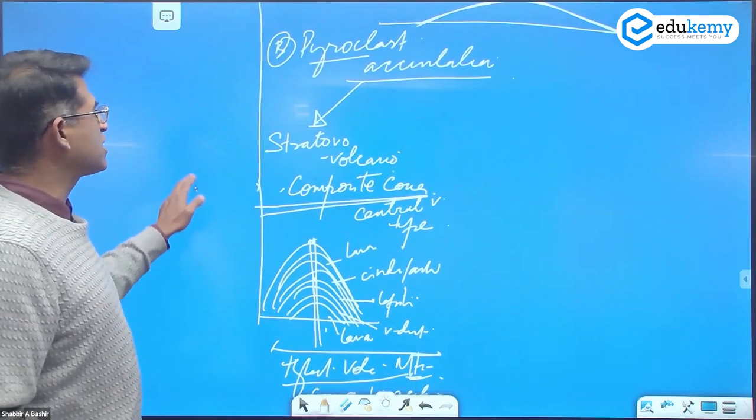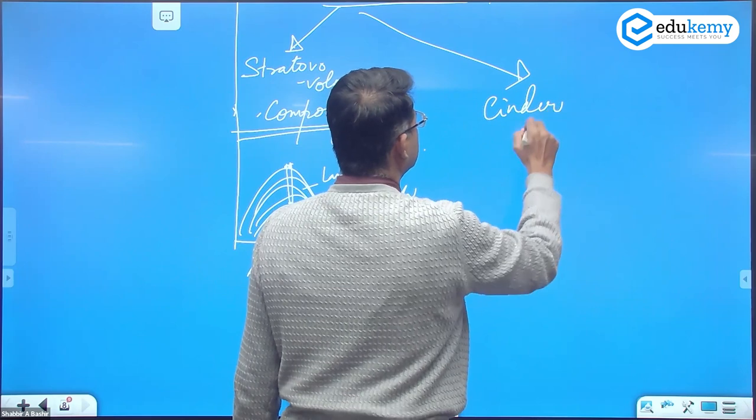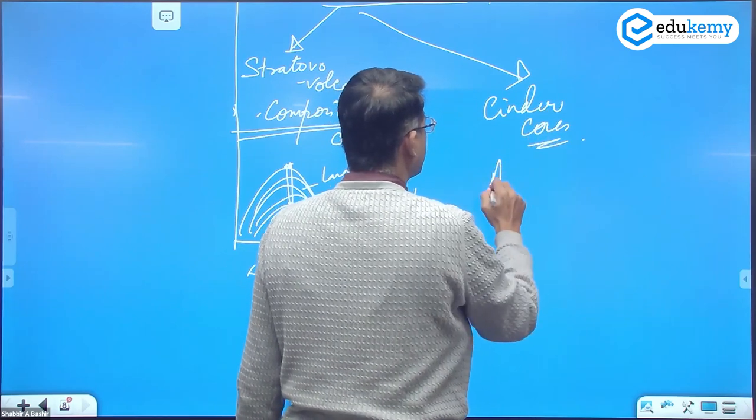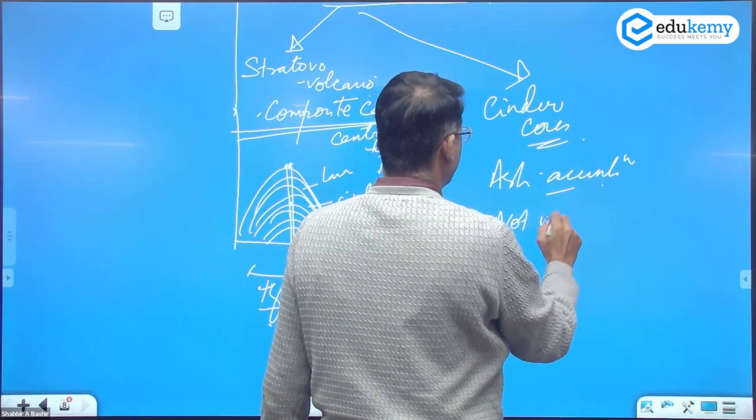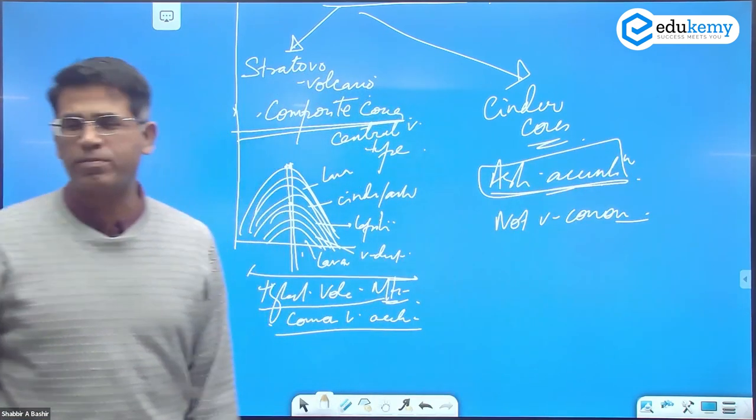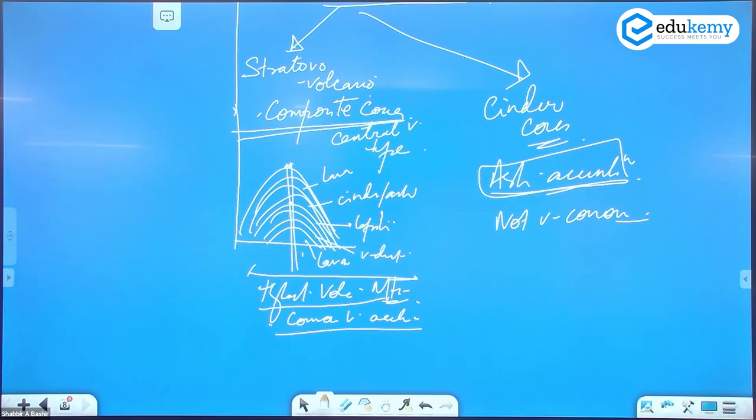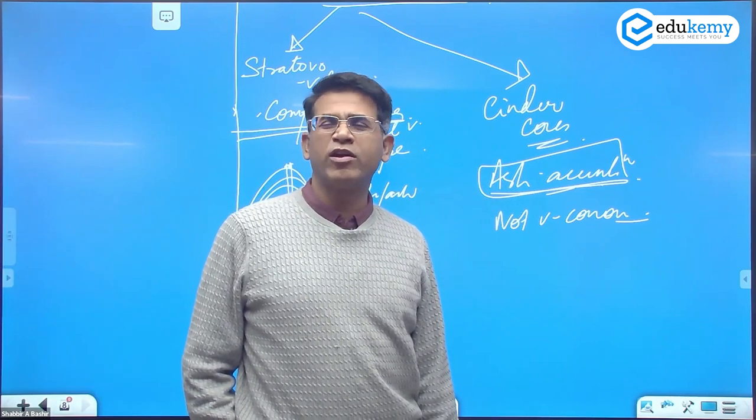The second is the cinder cones. Is mein ash accumulations, not very common, ash accumulations but they are not very common type. Africa has some of these cinder cones, and they are generally not very high, they are very low height. Not very high ones and not very common, cinder cones, the ash accumulations.